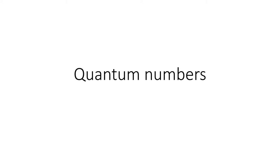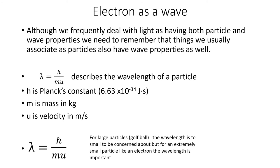In this video, we will be looking at quantum numbers. The first thing we want to talk about is that we have to start thinking about the electron not just as a particle, but the electron as a wave. Although we frequently deal with light as having both particle and wave properties, we need to remember that things we usually associate only as particles also have wave properties as well.